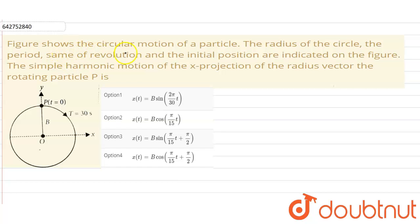Hello everyone, so our question is figure shows the circular motion of a particle. The radius of the circle, the period, same of the revolution and the initial position are indicated on the figure. The simple harmonic motion of the x projection of the radius vector of the rotating particle P is.